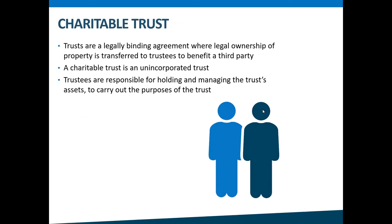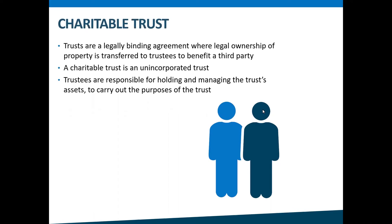We've discussed societies, and now we're going to move on to trusts. A trust is a legally binding agreement created when a person transfers legal ownership of property to trustees to be held, usually for a third party. For charities, the third party is the good they achieve through their charitable purpose. A charitable trust is an unincorporated trust — so it's not registered with the Companies Office — and trustees are responsible for holding and managing the trust's money and assets to carry out the purposes of the trust.